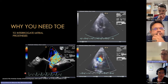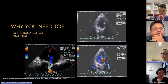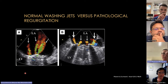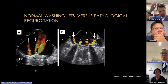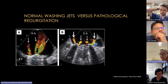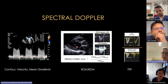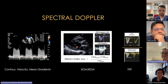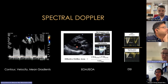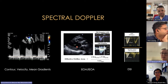Normal washing jets in a bileaflet mechanical mitral valve include three physiological jets. In the same view, jets coming from outside those orifices on either side represent pathological paravalvular regurgitation, not physiological washing jets. Spectral Doppler evaluation looks at the shape and contour of the trace, velocity, mean gradients, effective orifice area, and the Doppler Velocity Index (DVI), also called the dimensionless severity index (DSI).